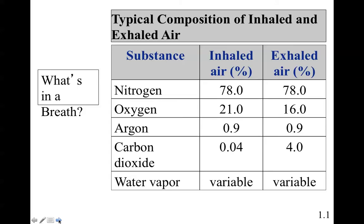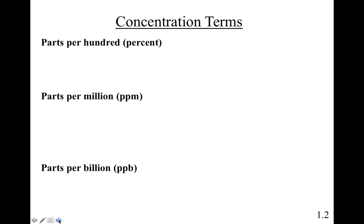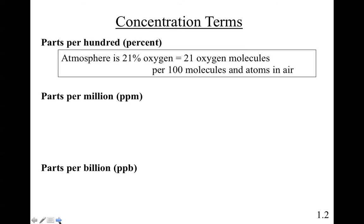Concentration terms you need to know for environmental science: you can express data with parts per hundred — everybody knows a penny is a part per hundred, it's 1% of a dollar. Parts per million (ppm) is used often in environmental science, and with more sophisticated instrumentation and the ability to detect very small amounts, we routinely use parts per billion. So the atmosphere is 21% oxygen, meaning 21 oxygen molecules per 100 molecules and atoms in air.